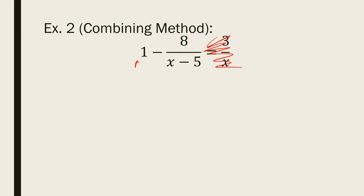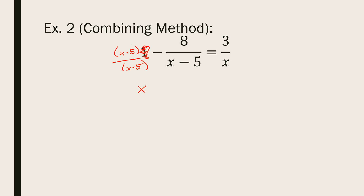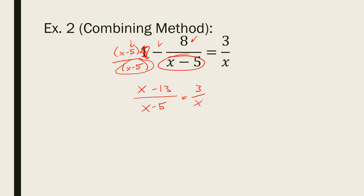Let's make one term have a denominator of x minus 5 by multiplying by x minus 5 over x minus 5 — which actually cancels to 1. Combining like terms: I have just x on top, then negative 5 minus 8 equals negative 13, and the LCD x minus 5 on the bottom. On the right-hand side: 3 over x. Now I have one fraction on each side, so I can cross multiply. Distributing: x squared minus 13x equals 3x minus 15.